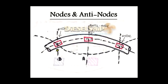Here we have two nodes and one anti-node on this vibratory curve. The anti-node is the point where it vibrates maximum, and the nodes are where there is no vibration or minimal vibration.